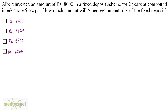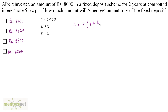The principal amount invested is P = 8000, the time period is N = 2 years, and the rate of interest is 5% per annum. The amount formula when interest is compounded annually is: A = P × (1 + R/100)^N.